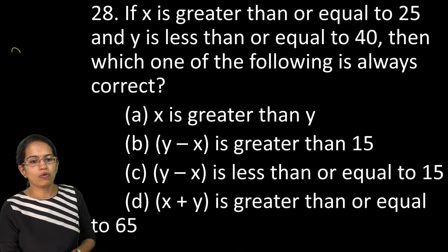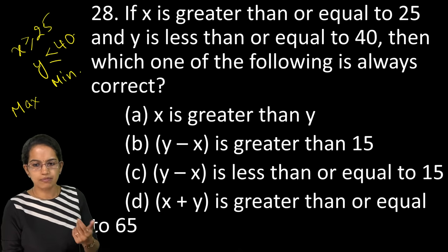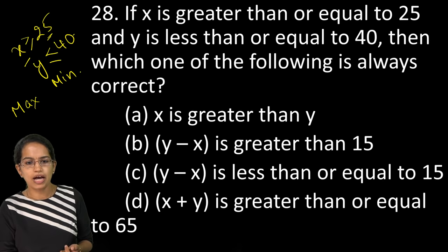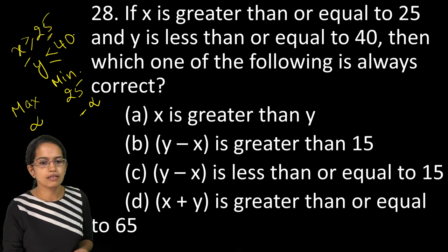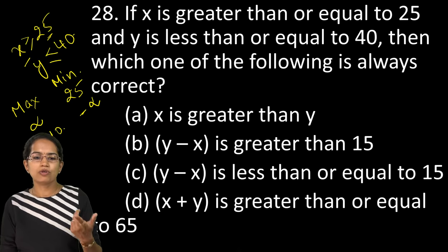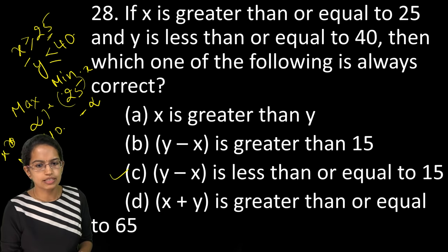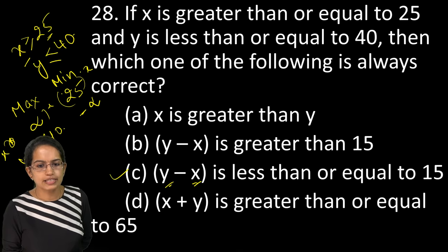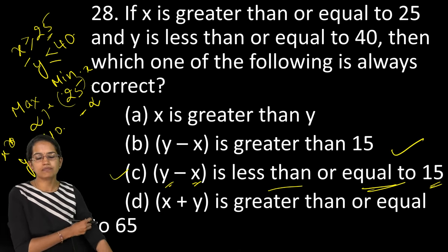The next very interesting question: x ≥ 25 and y ≤ 40. We calculate maxima and minima. The minimum value for x is 25 (maximum is infinite). The minimum value for y is negative infinite (maximum is 40). For y − x, the maximum occurs at y = 40 and x = 25, giving 40 − 25 = 15. So the value of (y − x) is always less than or equal to 15. That is the correct option.